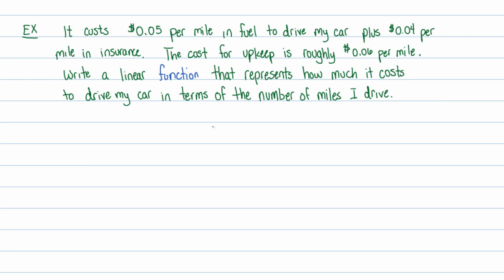Normally, we would write something like C is equal to, the cost is equal to, let's see, 5 cents per mile is 0.05M, plus 4 cents per mile for insurance, plus 0.04M, plus the cost for upkeep, that's like for tires and oil changes, so 0.06M. Of course, I could simplify this. We have 6 plus 4 plus 5, that's 15 cents per mile. So that implies the cost is 0.15M.